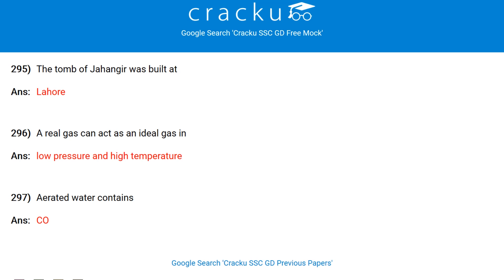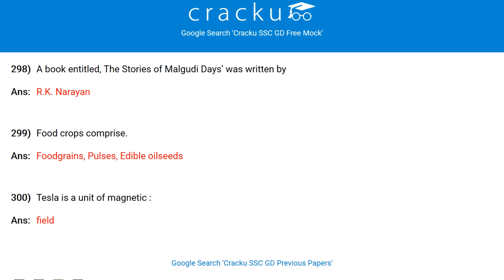The study of factor pricing is alternatively called the theory of functional distribution. What was the original name of Noor Jahan? Mehr-un-Nisa. The tomb of Jahangir was built at Lahore. A real gas can act as an ideal gas at low pressure and high temperature. Aerated water contains carbon dioxide. A book titled 'The Stories of Malgudi Days' was written by R.K. Narayan.